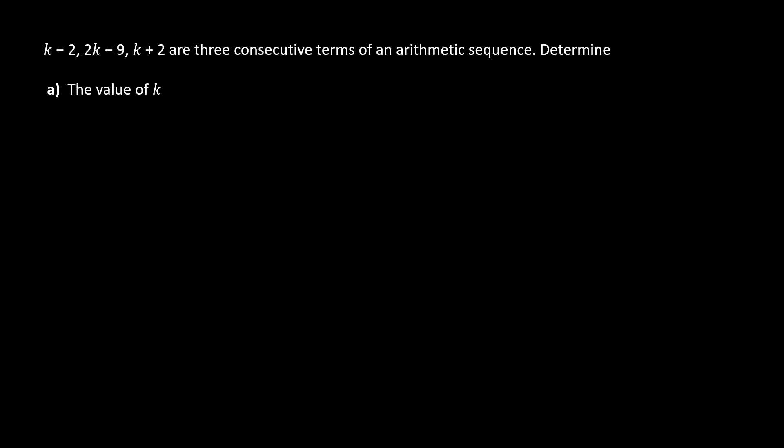Hello everyone. For the first part of this problem, we are to find the unknown k given these three terms are three consecutive terms of an arithmetic sequence.